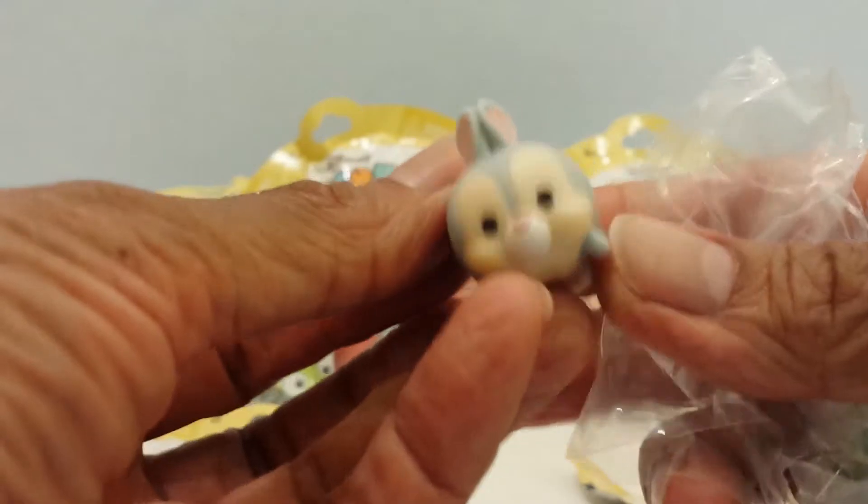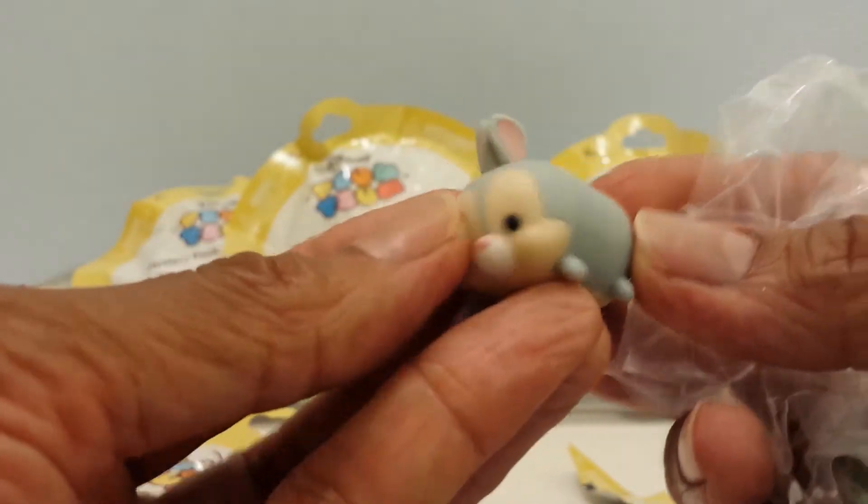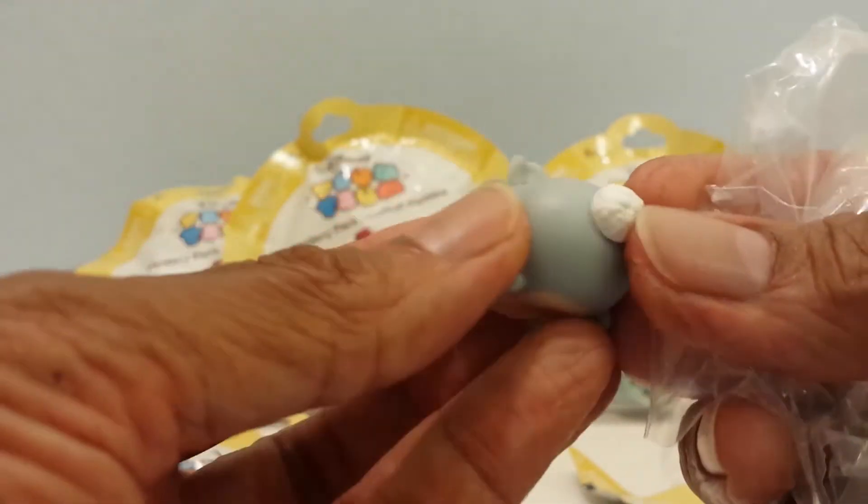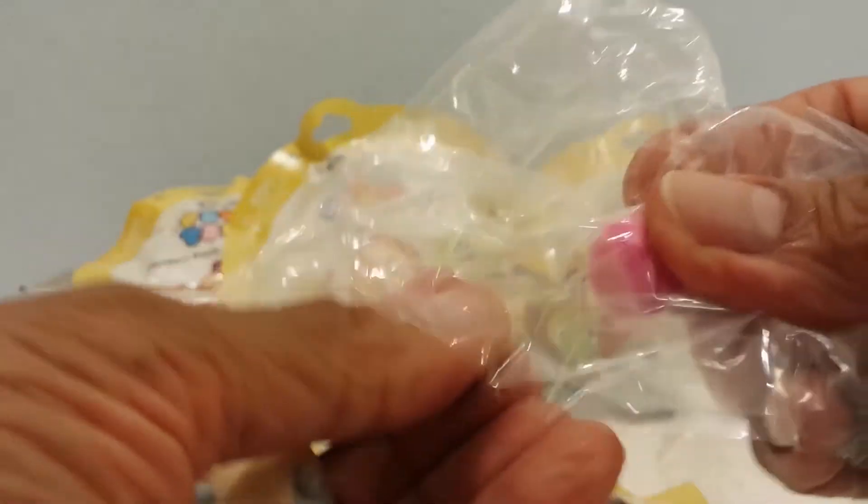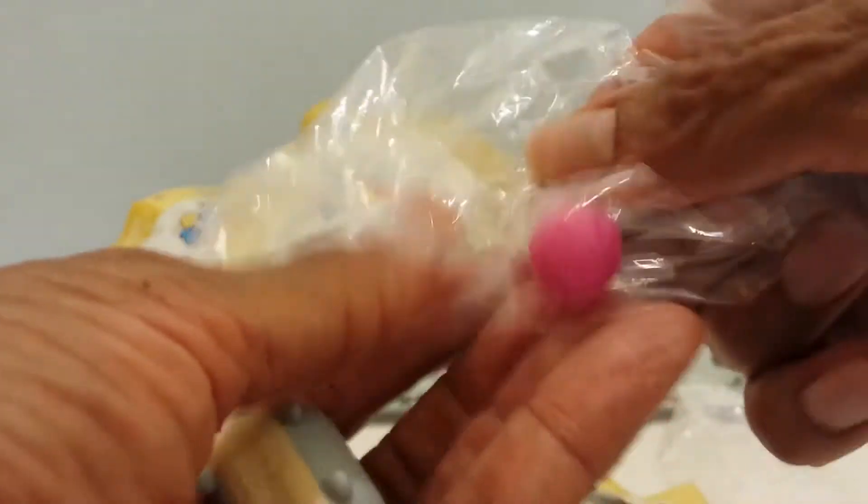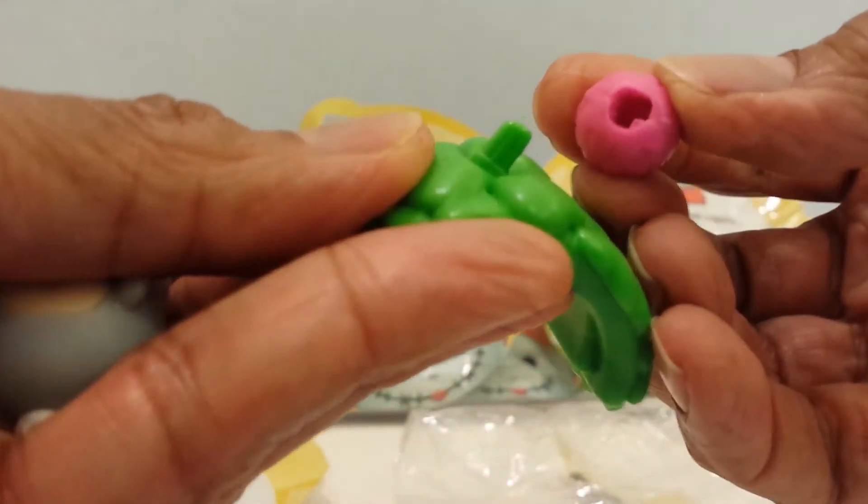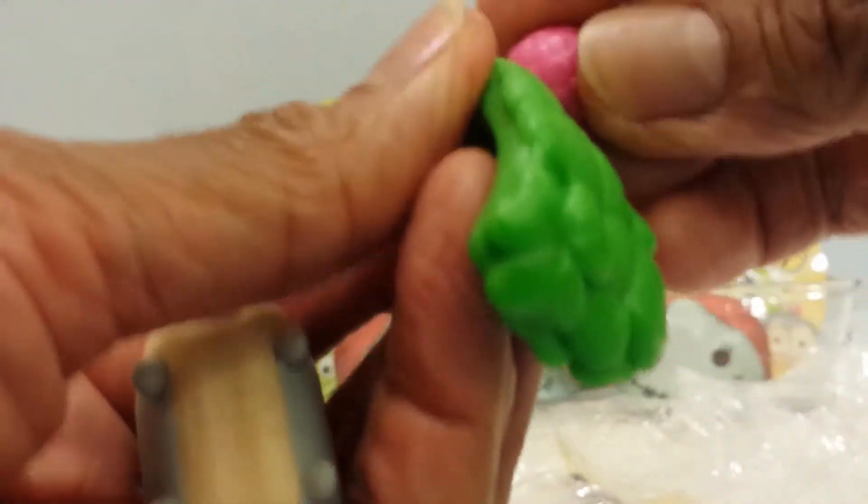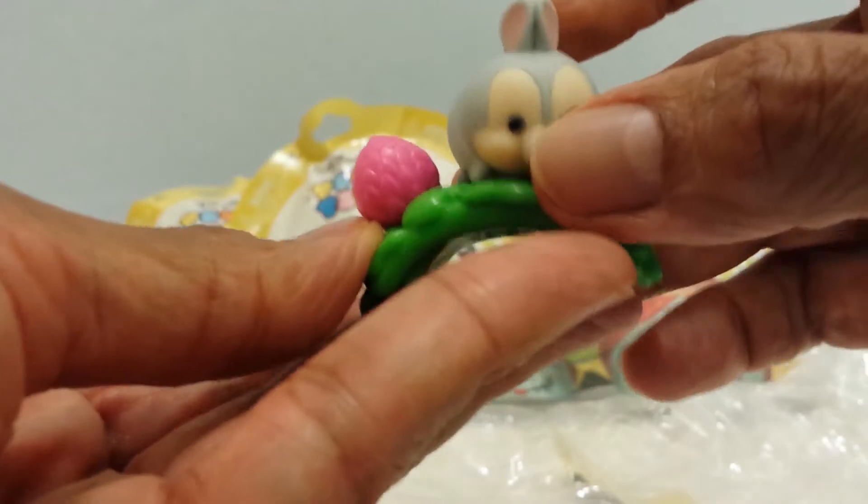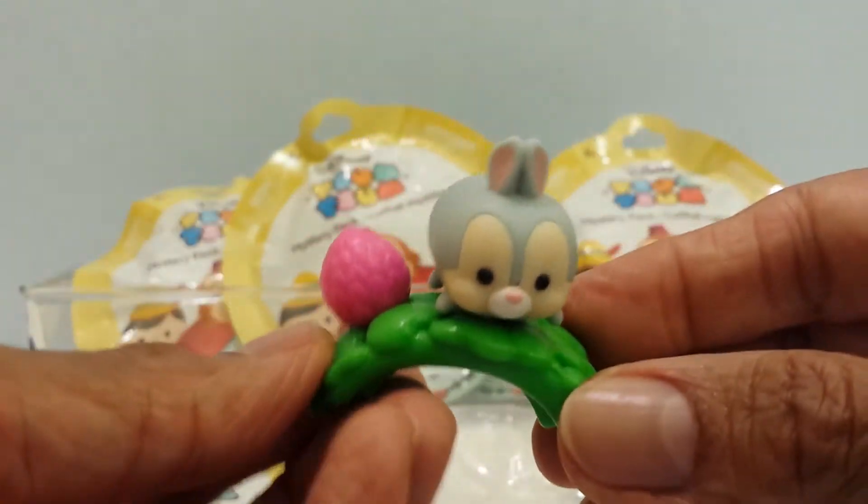We have Thumper from Bambi, he's so cute. Here he is looking cute, gray and pink ears, pink nose, cute little white tail. And there's a little ball, I think it's a cute little flower or something. Here's his little accessory piece. The little groove in the back belongs here and I think the package has him on it like this looking super cool.